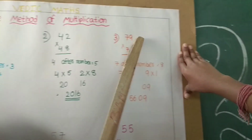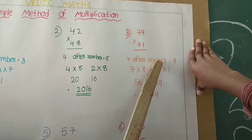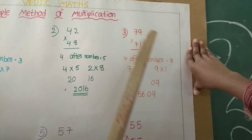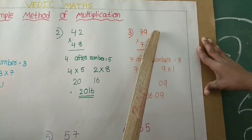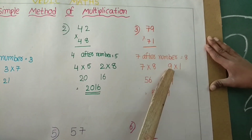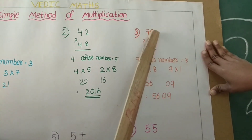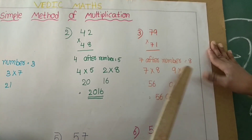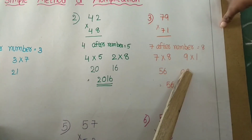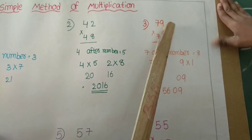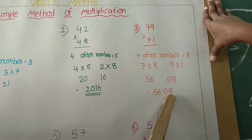Another example: 79 into 71. The tens digit 7, the next number is 8. 7 into 8 is equal to 56. The units digit multiplication: 9 into 1 is equal to 9. Since 9 is a single digit, we write it as 09. Answer is 79 into 71 is equal to 5609.